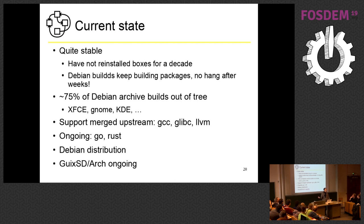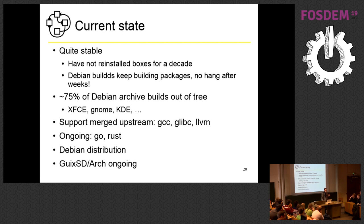We have about three quarters of Debian building, which is really significant — you don't have things without patches like Firefox or LibreOffice, but all the dependencies are basically there except a few things like cargo, which we are working on. We have XFCE, GNOME, and KDE working. It's supported upstream — this is really an operating system which exists upstream in GCC, glibc, and LLVM. We are working on Go and Rust support, so that's progressing.